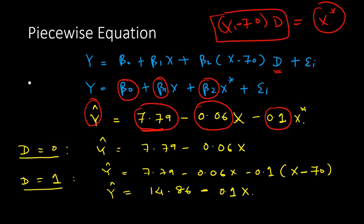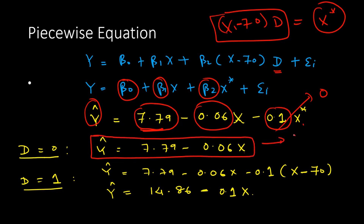Recall that x* is (x − 70)·D. When D = 0, the x* term vanishes and we are left with ŷ = 7.79 − 0.06x. This is the first equation, which we call L1 — the regression line for the region where x is less than or equal to 70.